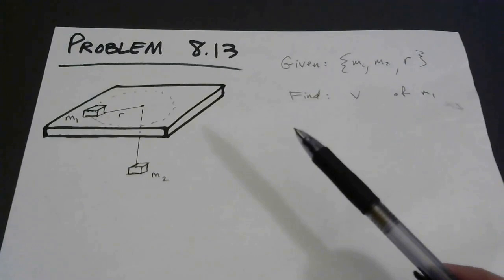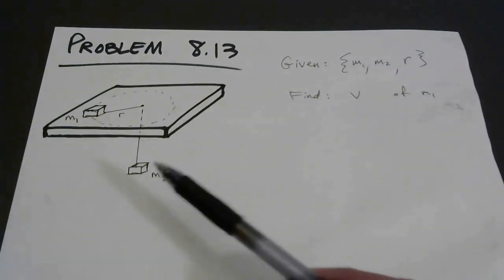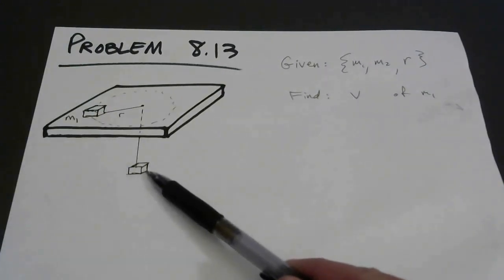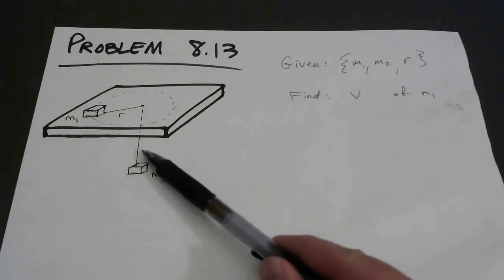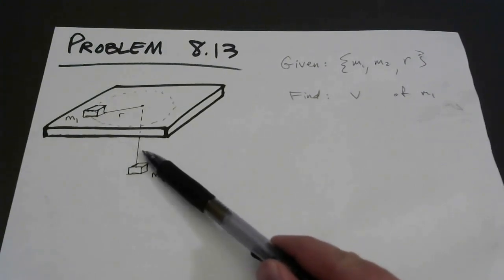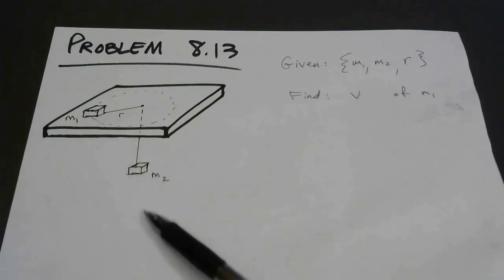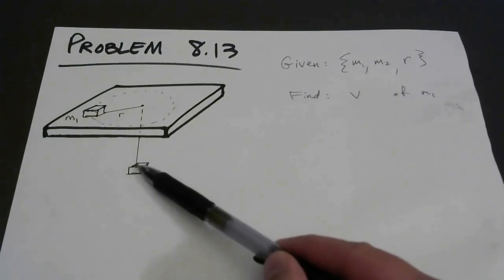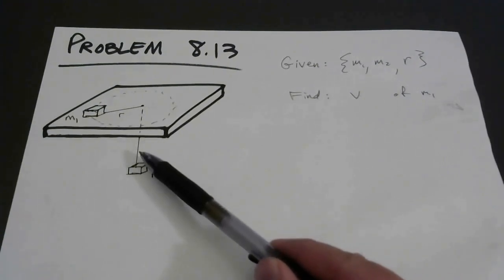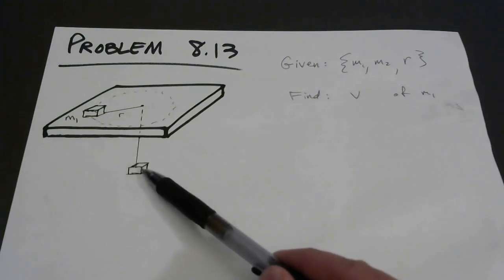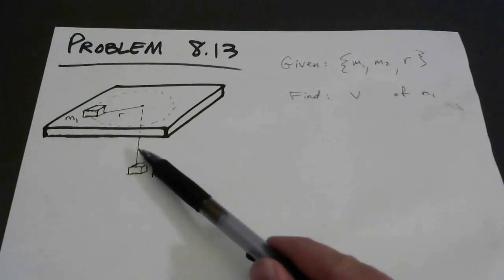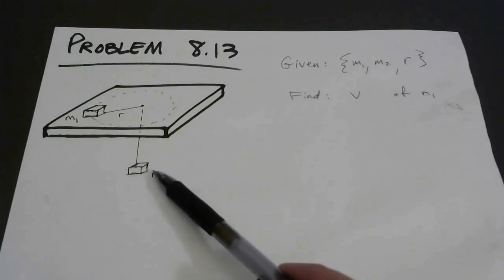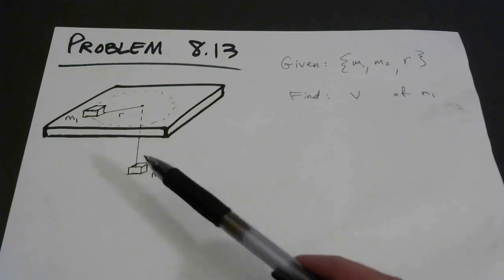Your first instinct probably is: why doesn't this thing just fall? What's keeping it from falling? Well, the only thing touching it is the string. Sure, there's gravity pulling down and the string pulls up, so there must be tension in the string in order to keep this thing from falling. What would the tension have to be? It's pretty clear it has to equal the gravitational force on mass two.